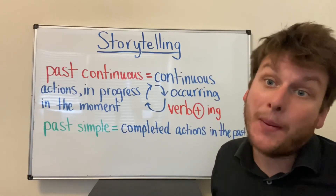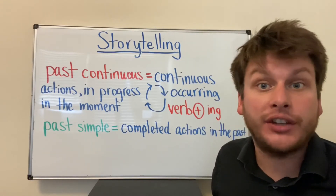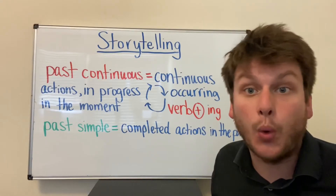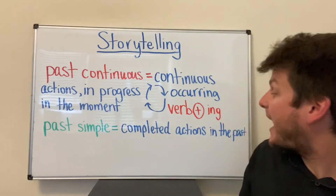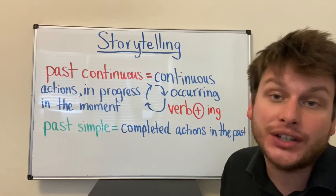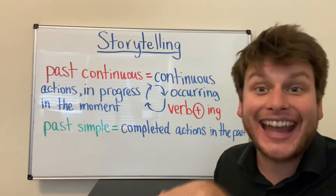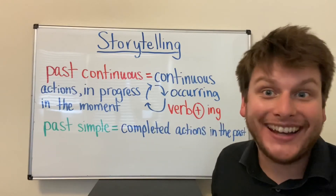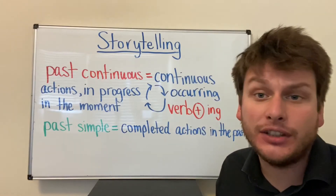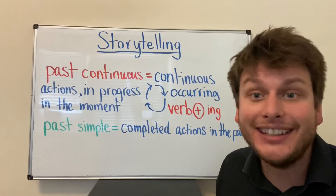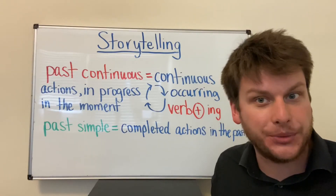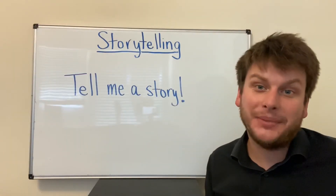To make it past continuous, conjugate the verb 'to be' — was or were. Past simple is for completed actions in the past — started and stopped. So for example, we use the past continuous to set the scene, to help our audience imagine the situation.